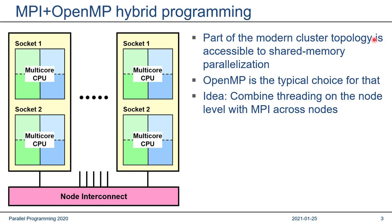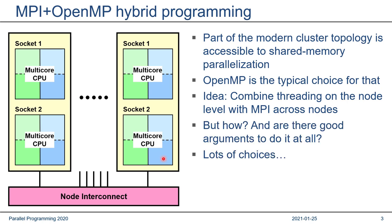Why should we combine two programming models into one? If you look at modern cluster topology, the part inside a shared memory node is accessible to shared memory parallelization. It seems natural to use a threading model like OpenMP for that subsystem. The basic idea is to combine threading on the node level with MPI between nodes, where message passing is necessary.